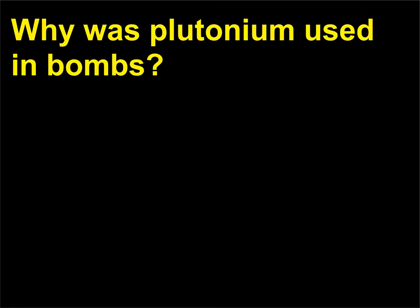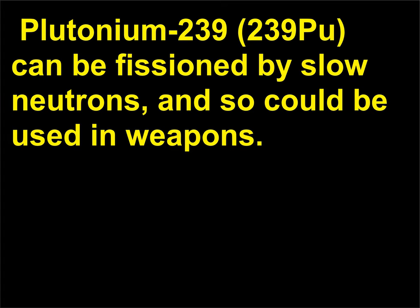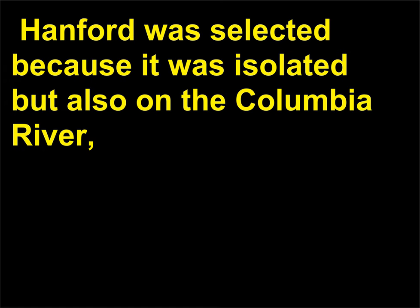Why was plutonium used in bombs? Plutonium is not found in nature, but it is produced in reactors by bombarding uranium-238 with neutrons. Plutonium-239 can be fissioned by slow neutrons and so could be used in weapons. In December 1942, Hanford, Oregon, was chosen as a site for reactors that would produce plutonium. Hanford was selected because it was isolated but also on the Columbia River, which afforded a source of cooling water.